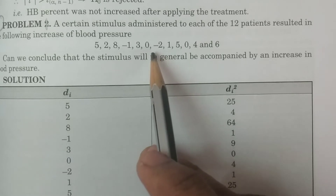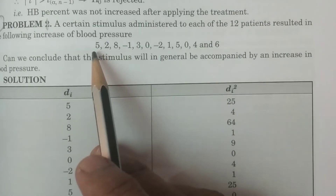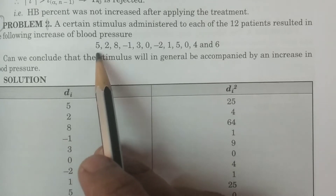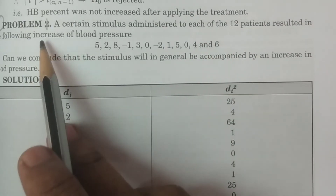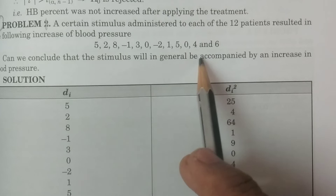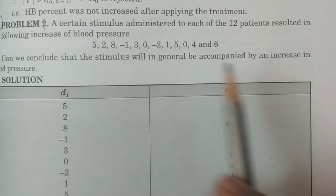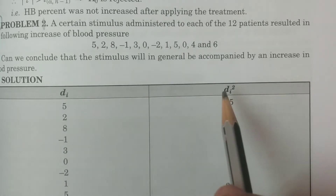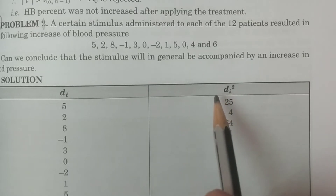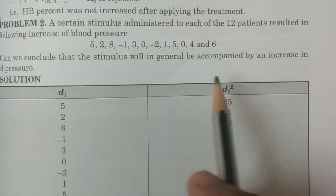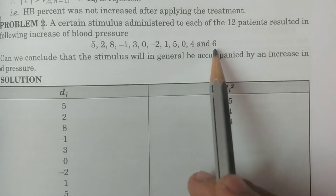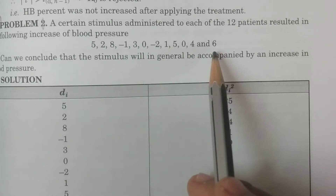For example, before the treatment it is 120, after it is 125, so the increase is 5. Like that, 5, 2, 8, minus 1 — these are the observations. The increase in blood pressure is called Di, where Di is nothing but Xi minus Yi. Xi is the reading before the treatment, and Yi is the reading after the treatment. So the difference Di is given as the increase.